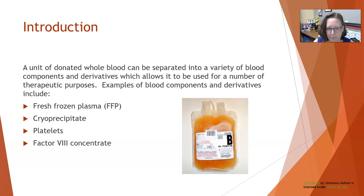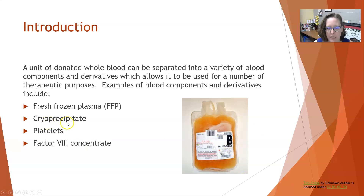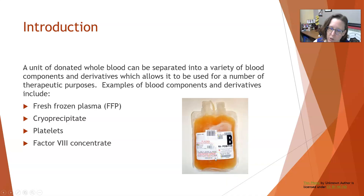A unit of donated whole blood can be separated into a variety of blood components and derivatives, allowing it to be used for a number of therapeutic purposes. Examples include packed red cells, which is what we really think of with blood donations. There's also fresh frozen plasma, represented in this picture, cryoprecipitate in a much smaller bag, platelets in a larger bag stored at room temperature, and factor 8 concentrate in a much smaller container.